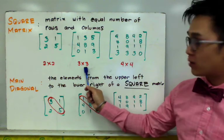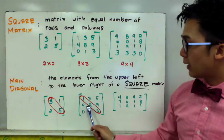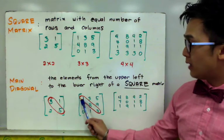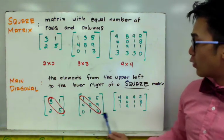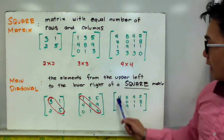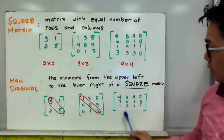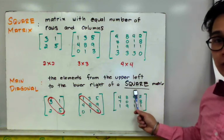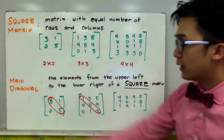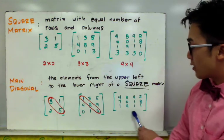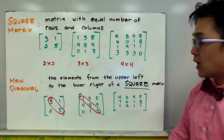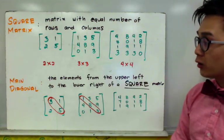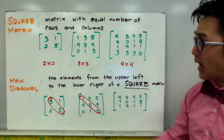For a 3 by 3 matrix, the main diagonal is 1, 8, and 3 — the entries from the upper left going to the lower right. For a non-square matrix such as a 3 by 4, the main diagonal does not exist and is null, because the main diagonal is only defined for square matrices.